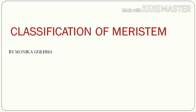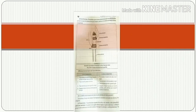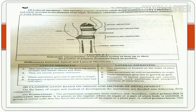Today we will start our discussion with classification based on origin and method of development. On the basis of origin and method of development, the meristems are divided into three categories: pro-meristem, primary meristem, and secondary meristem.